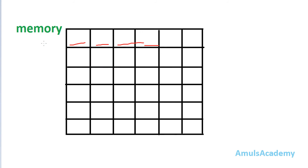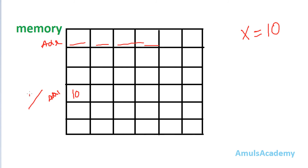Each memory cell is called a memory location and data used in our program is stored there. Each memory cell has its own address. For example, if I use the value 10 in my program, it gets stored in a free memory cell. To make retrieving that data easy, we give a name to that memory location — that name is called a variable. So if x equals 10, then x is the name of that memory cell.